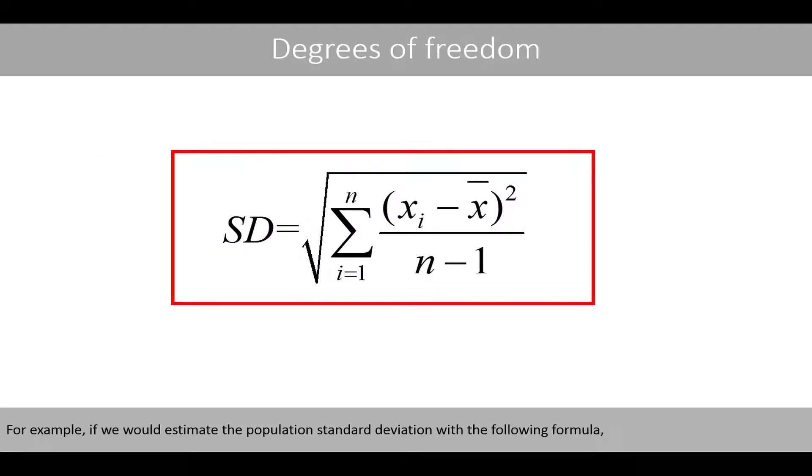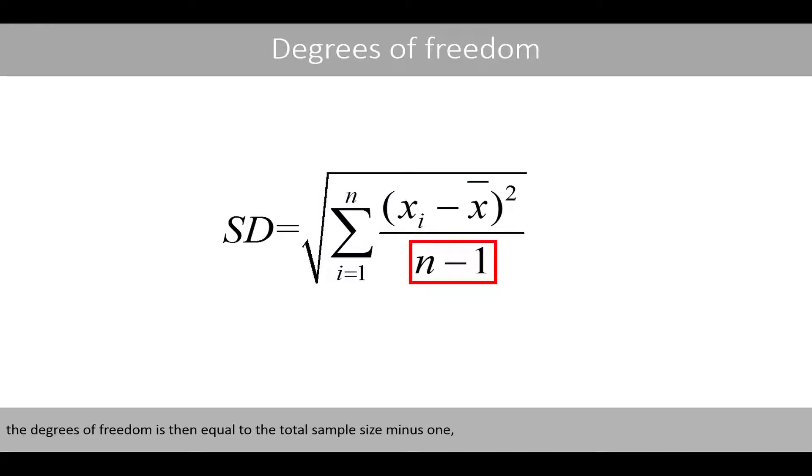For example, if we would estimate the population standard deviation with the following formula, the degrees of freedom is then equal to the total sample size minus 1, because we first need to estimate the population mean value before we calculate the standard deviation.